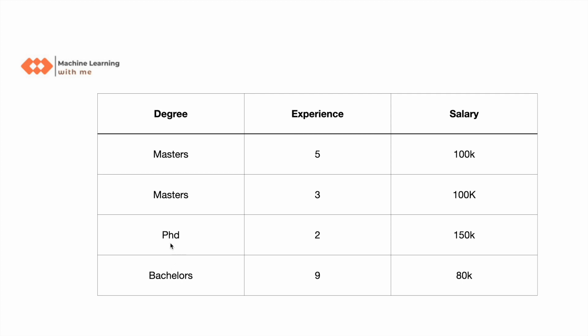In simple terms: a person with a PhD has more salary compared to Masters and Bachelors. If a decision tree can extract such information, it has high information gain. High information gain comes when there is a reduction in the randomness of the data. The degree column has only three distinct values, so we start with degree, then experience, and finally salary as our leaf node.